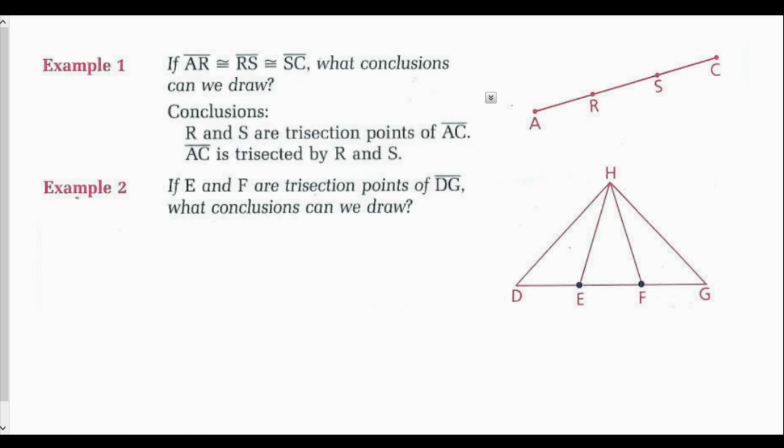Example 2: if E and F are trisection points of line segment DG, what conclusions can we draw? If I have two trisection points, then line segment DE is congruent to line segment EF, which is congruent to line segment FG. I would also know that line segment HE and line segment HF are trisectors of line segment DG.